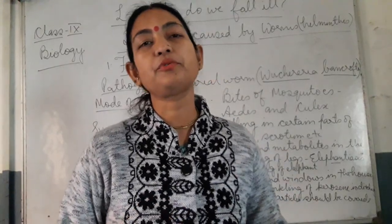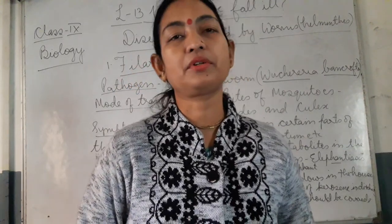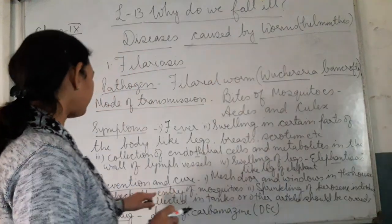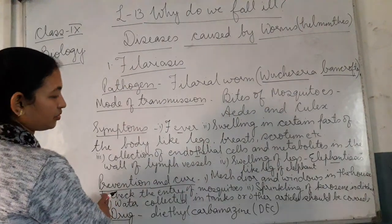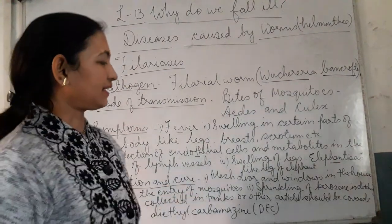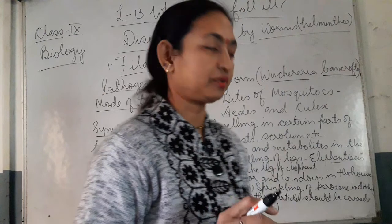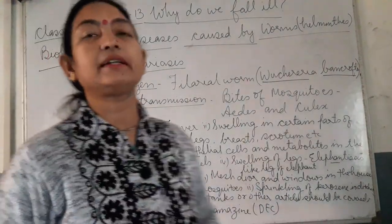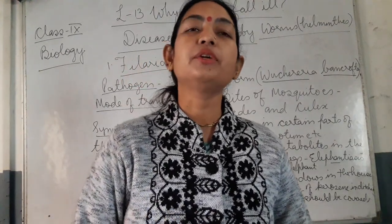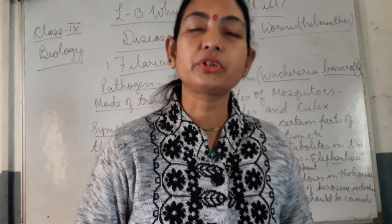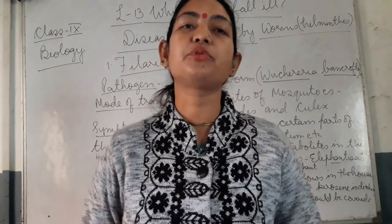In the ditches we have to spray some kerosene so that when the kerosene is sprayed, the mosquito larvae cannot grow and they die. The first prevention is mesh doors and windows in the house. The second is sprinkling of kerosene in ditches, which prevents the growth of mosquitoes. Also, water collected in tanks and other articles should be covered nicely so that the mosquitoes do not enter and lay their eggs, because mosquitoes lay eggs on stagnant water and can breed easily and grow into larvae.